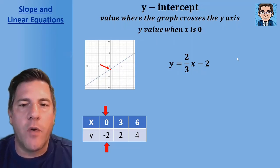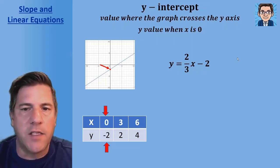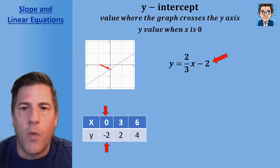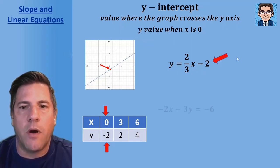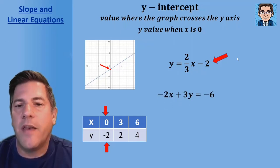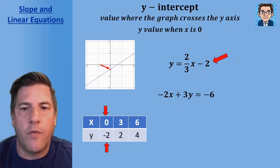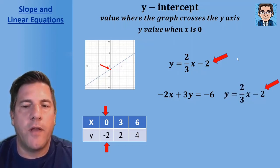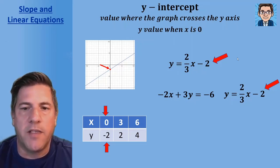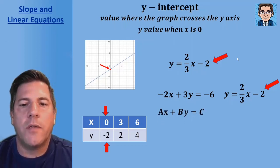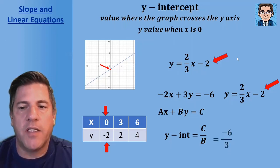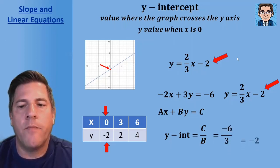For an equation in slope-intercept form, the y-intercept is just the number not being multiplied by x — here that's negative two. If the equation is not solved for y, we can solve for y and read off the constant, or use standard form: in ax + by = c, the y-intercept is c over b. So negative six over three gives us negative two.